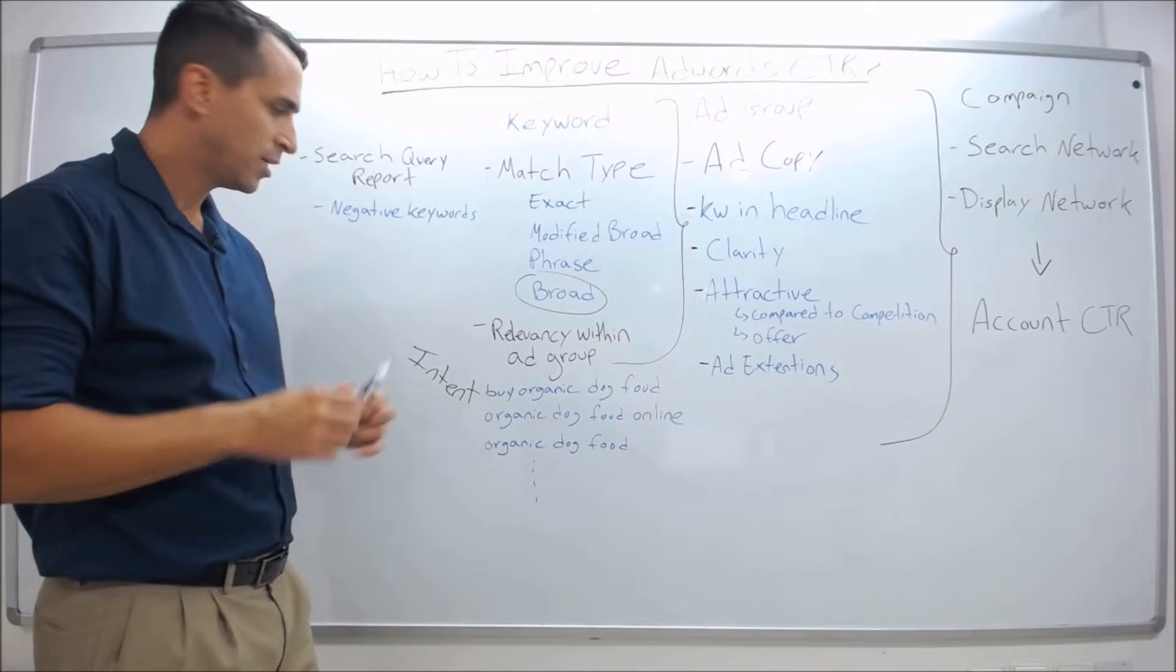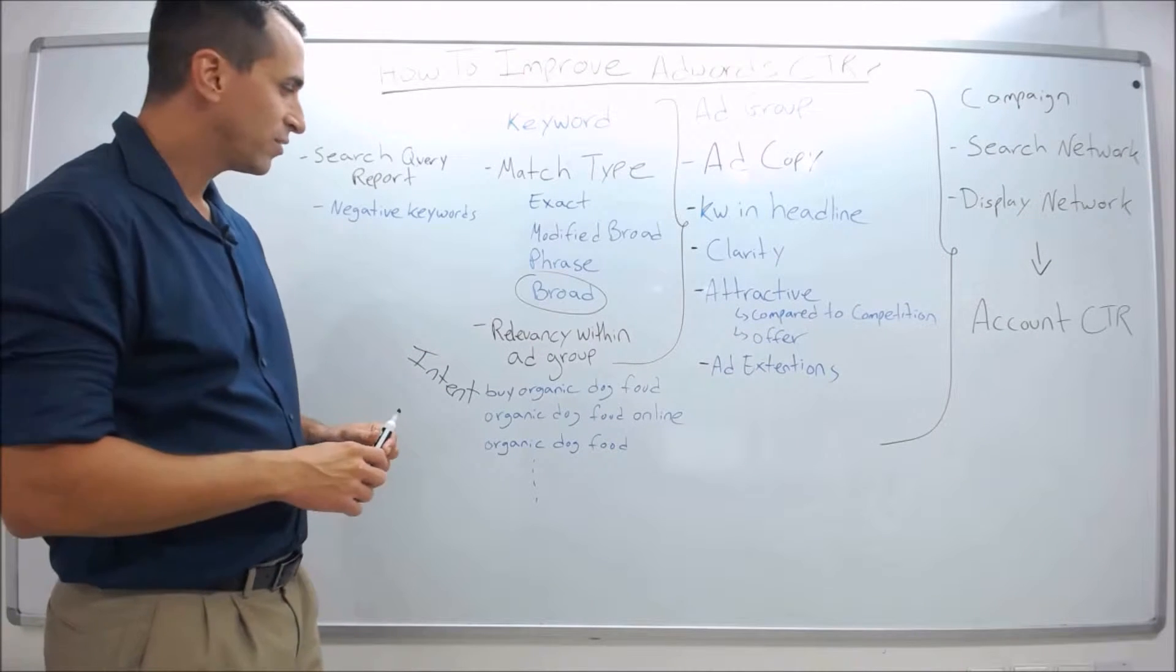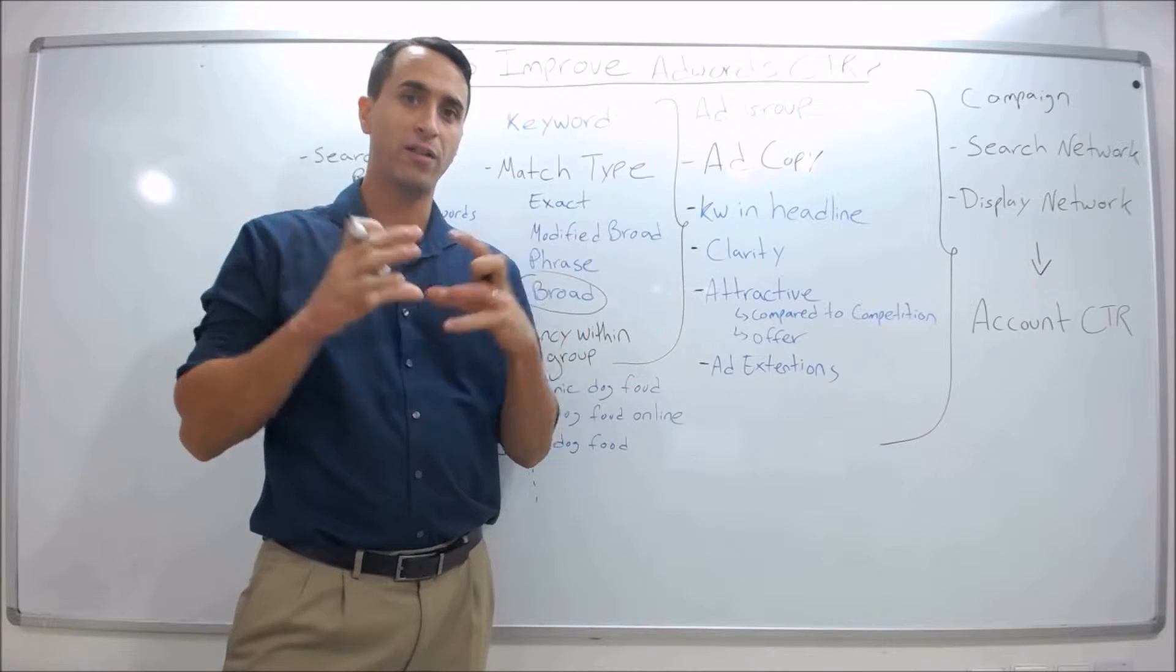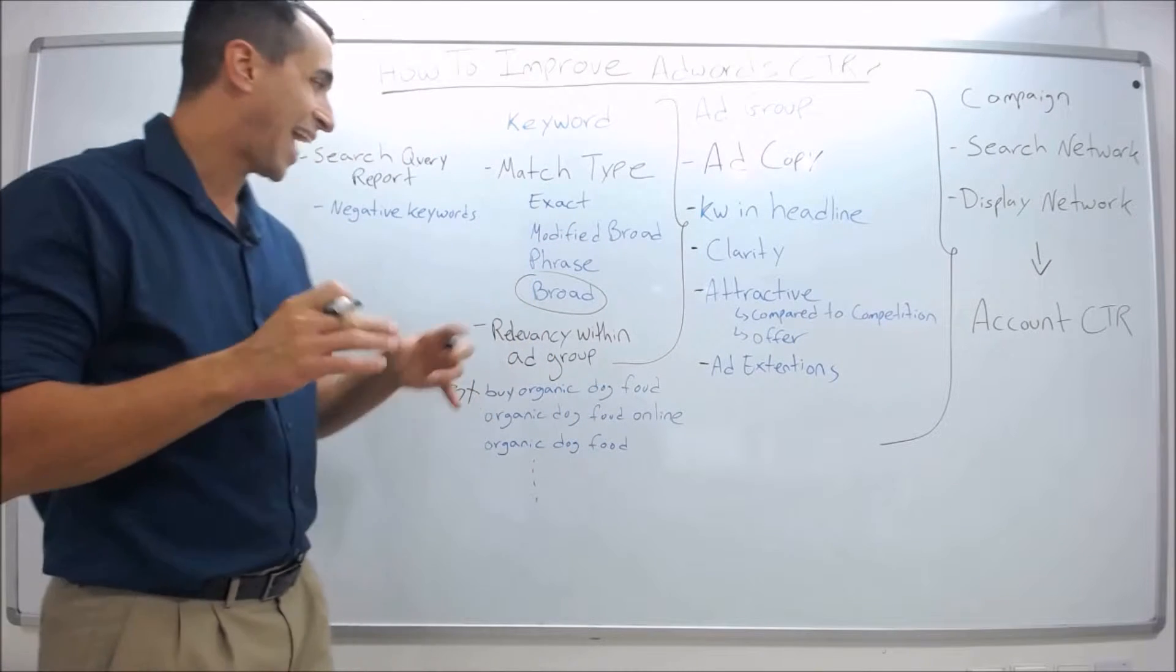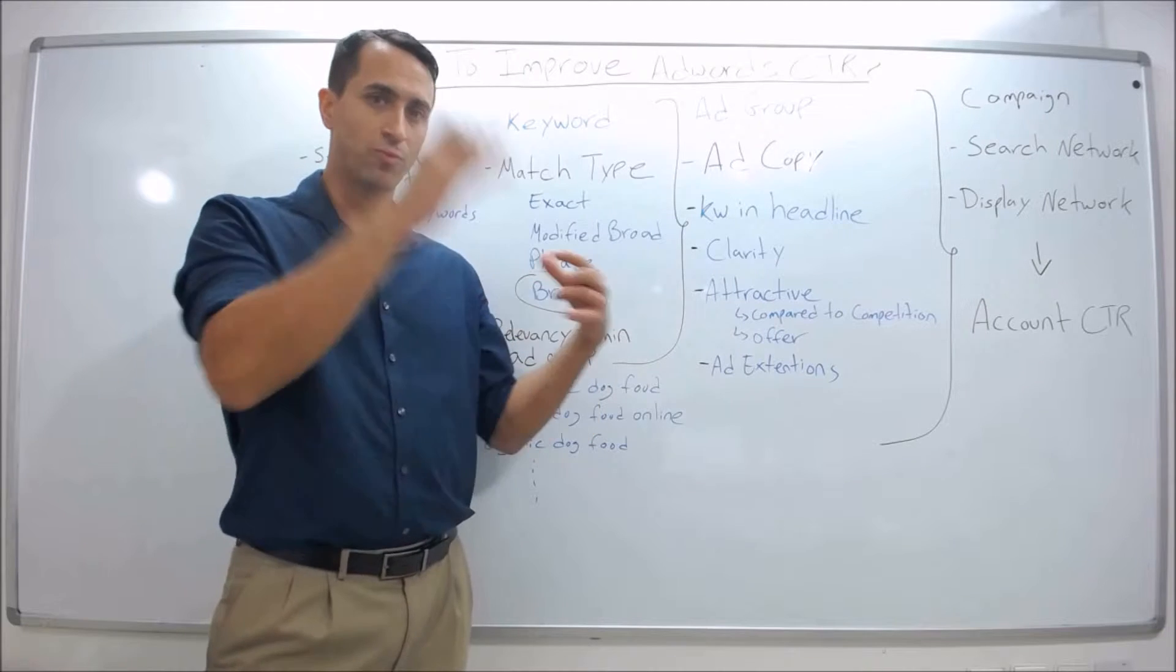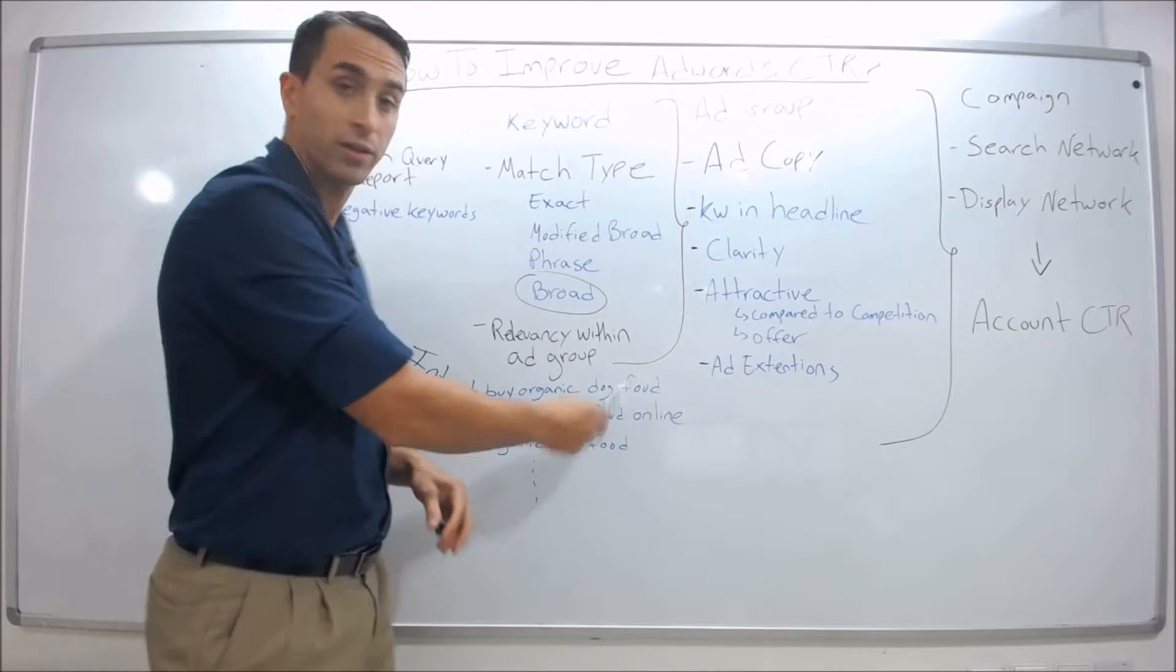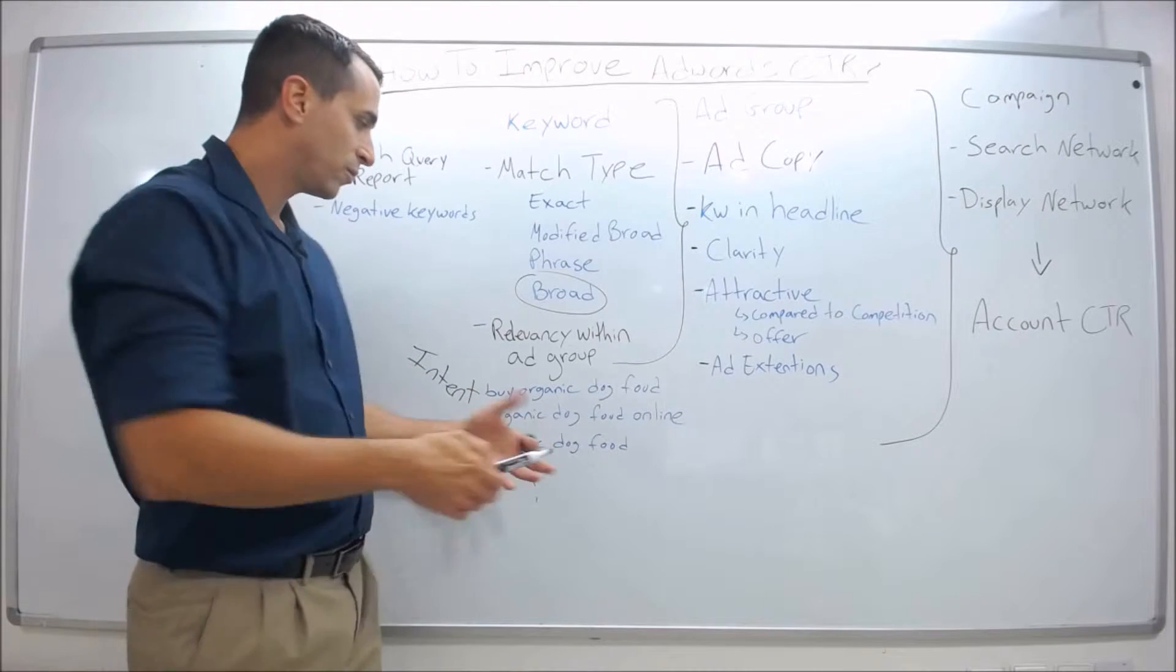That's another tutorial. Now, the second part is relevancy within an ad group. You want your keywords within an ad group to be very relevant and close together so when you write an ad for the ad group, it's relevant. Some examples are buy organic dog food, organic dog food online, organic dog food.